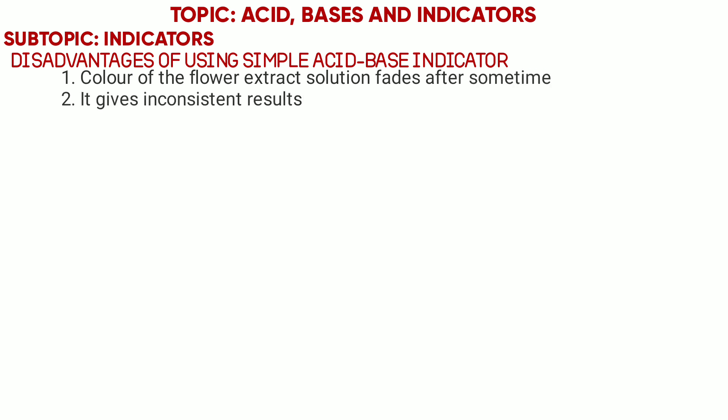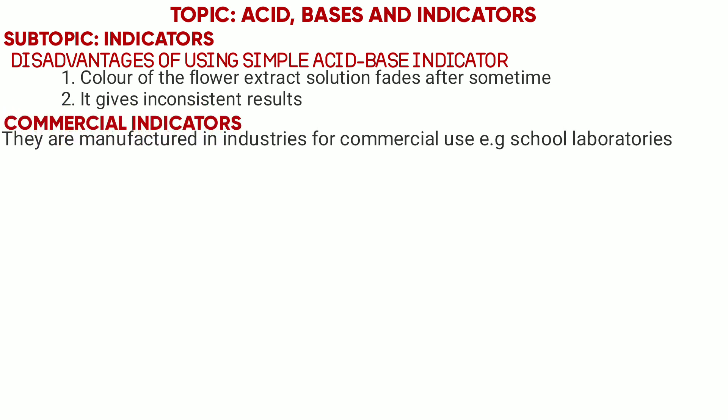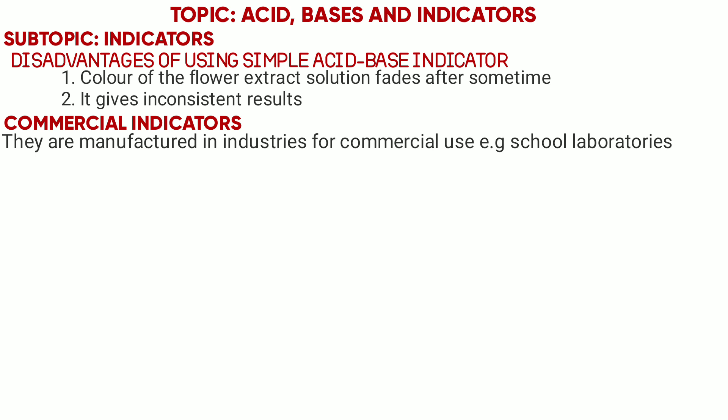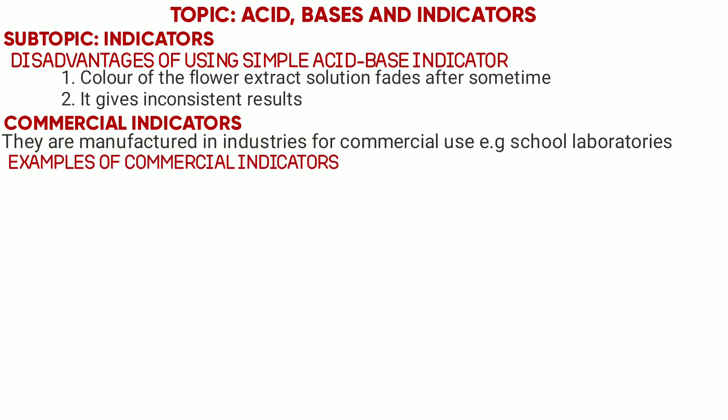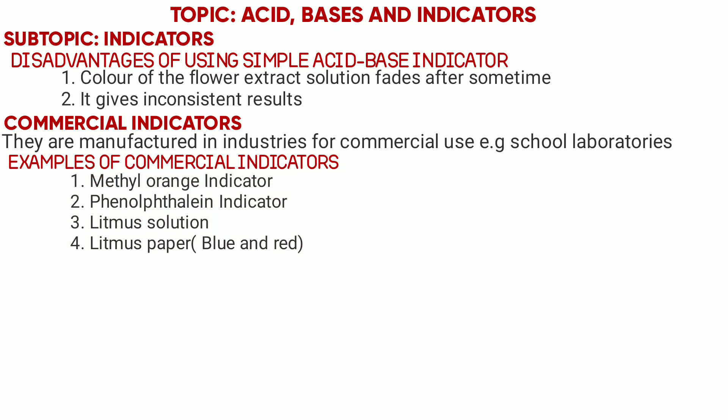Next we look at commercial indicators. Commercial indicators are those indicators from manufactured industries for commercial use. These include Methyl Orange, Phenolphthalein indicator, Litmus Paper, and Litmus Blue and Red.